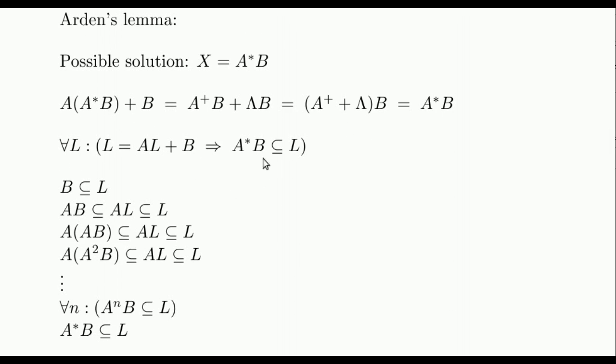In the second place, we see that, in fact, any other solution L contains A star B. Note that, since L satisfies the equation, L contains B. For the same reason, L contains AL, and thus AB. Similarly, since L contains AL and AB, then it contains A squared B. So, we see that L contains A to the n B for any n. We conclude that L contains A star B.